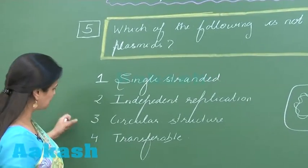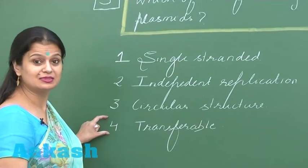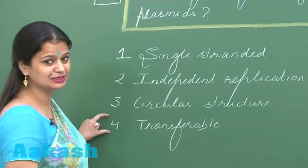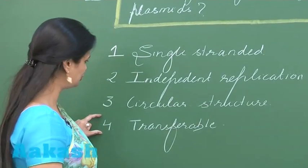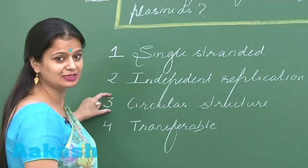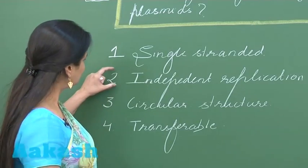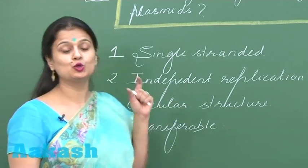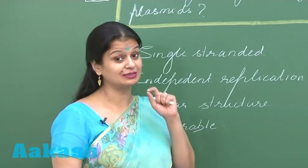Let's see the options here. Plasmids can be easily transferred from one bacteria to another with the help of the conjugation tube. Third option: they are circular - yes. Plasmids show autonomous replication, that is, for replication they are not dependent on the main DNA - this is also correct.